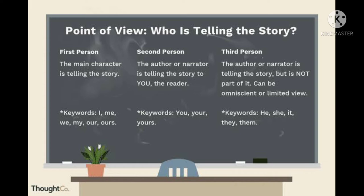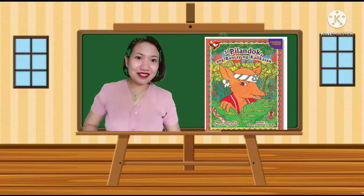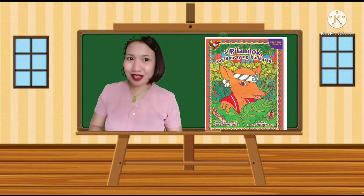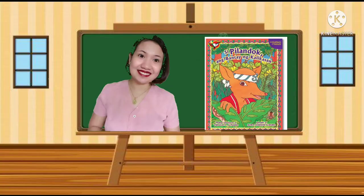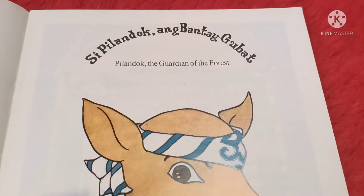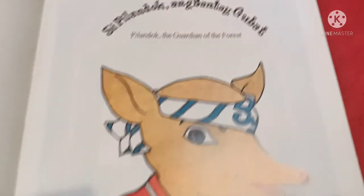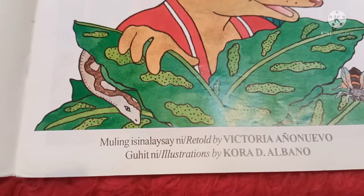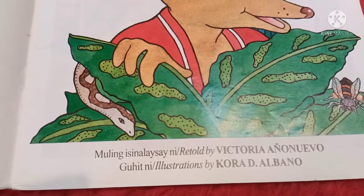Now I will read a story to you, and I want you to identify the elements of a short story. Our story for today is 'Pilandok, the Guardian of the Forest,' retold by Victoria Año Nuevo, with illustrations by Cora D. Albano.